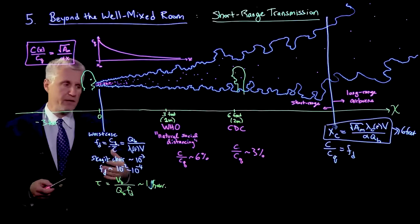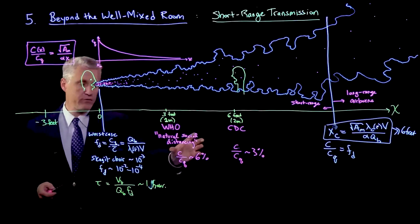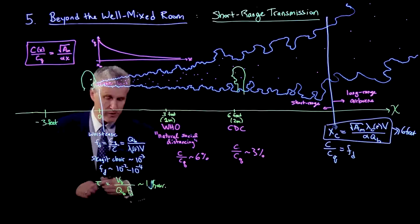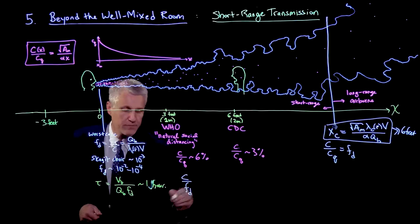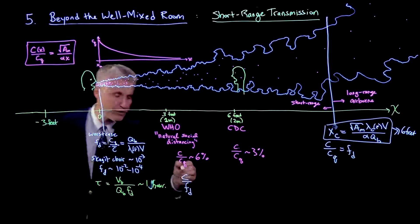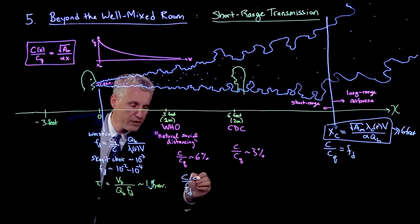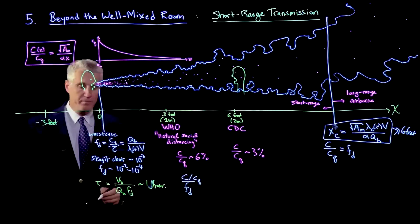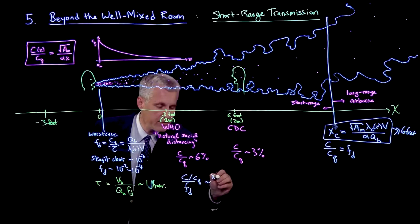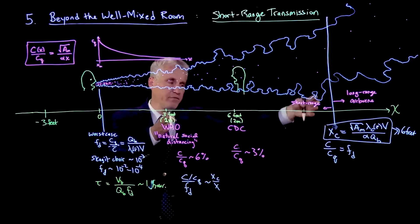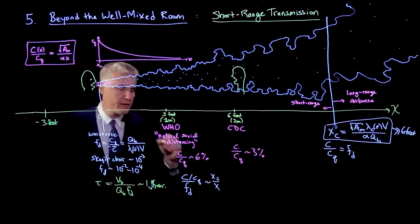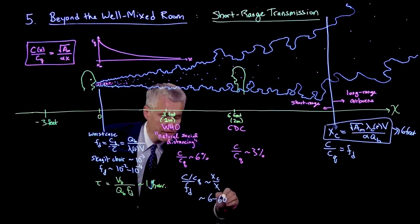What we're really interested in is how these fractions compare with the well-mixed room. For that, I'd like to do C over CQ divided by Fd. This can also be written as xc over x. It's how much farther is that crossover point relative to where you're standing.